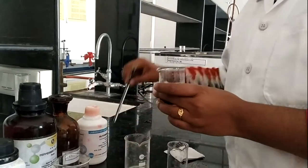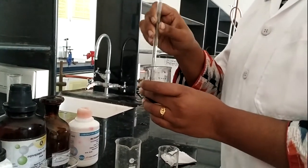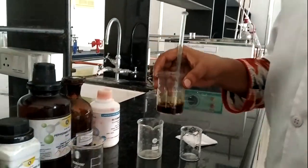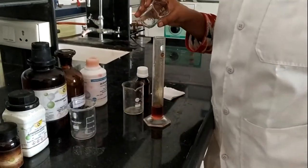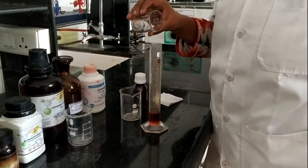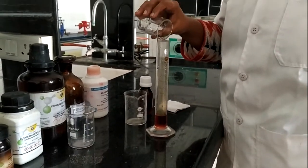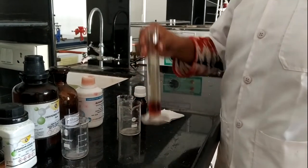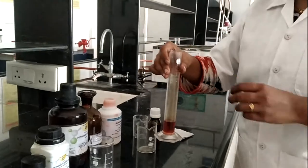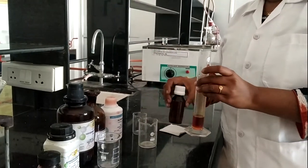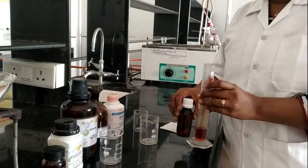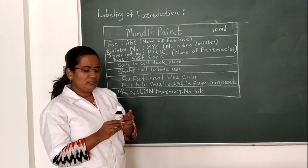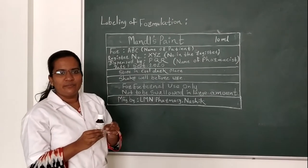Stir it properly and then proceed for volume makeup. Transfer the formulation into the measuring cylinder and make up the volume with glycerin up to 10 ml. Now pour it into the amber-colored bottle and proceed to the labeling part.